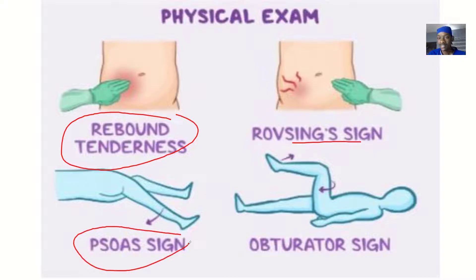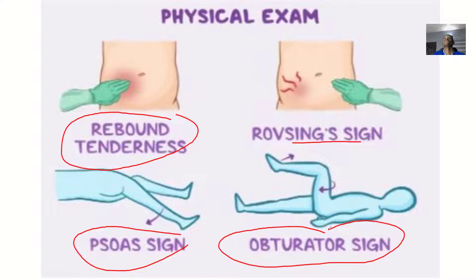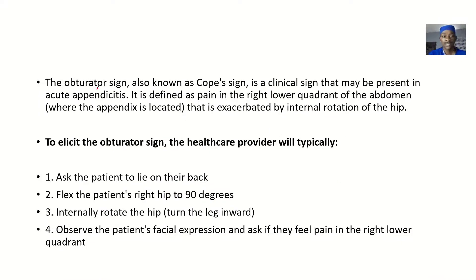There's also the psoas sign, where the patient is lying laterally and you draw the leg back — if they feel pain, that's the psoas sign. The obturator sign involves the patient lying facing up, raising their leg 90 degrees, moving it back and forth, and twisting it. If there's pain, that's the obturator sign. It is also known as the Coups sign — a clinical sign that may be present in acute appendicitis, defined as pain in the right lower quadrant of the abdomen, which is the right iliac fossa where the appendix is located.